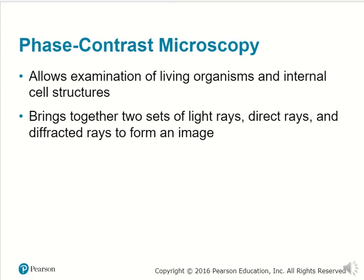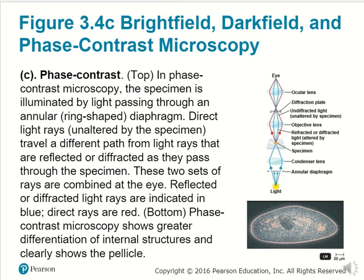These next few slides get into definitions of different types of microscopy and how each one is unique. Phase contrast microscopy allows the examination of living organisms and also internal cell structures, getting into cellular organisms and parts of the cell. It brings together two sets of light rays: direct rays and diffracted rays. What is shown on the right is how direct light and refracted light are eventually combined.